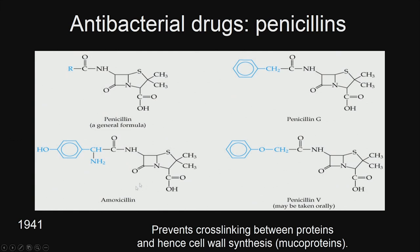Look at antibiotic amoxicillin — it has got the beta-lactam ring. Penicillin V, penicillin G — this beta-lactam ring is intact. There are a lot of modifications to the side chains to improve solubility, improve stability, balance the hydrophilic and hydrophobic nature of the drug. So many reasons to add extra substitutions to improve drug-likeness. How do they act? They prevent cross-linking between proteins and hence cell wall synthesis, so the bacteria cell does not grow.